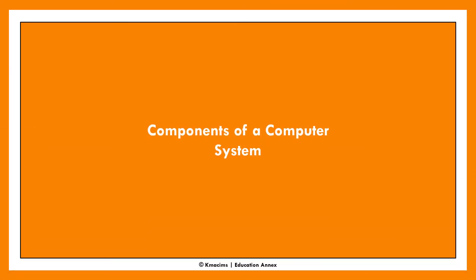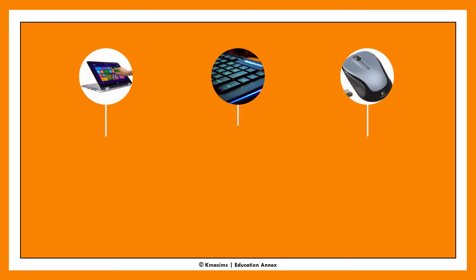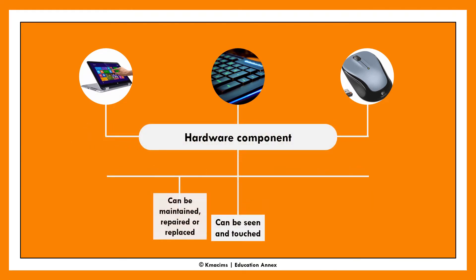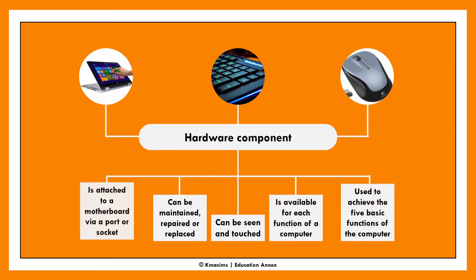There are three major components of the computer system: the hardware, the software, and the peopleware. The hardware components can be seen and touched. There is hardware available for each of the five basic functions — for example, the keyboard for input, the printer for output, the CPU for processing, the hard disk drive for storage, and the router for communication. Computer hardware is always attached to the motherboard through a port system or socket, and it can be maintained, repaired, or replaced.